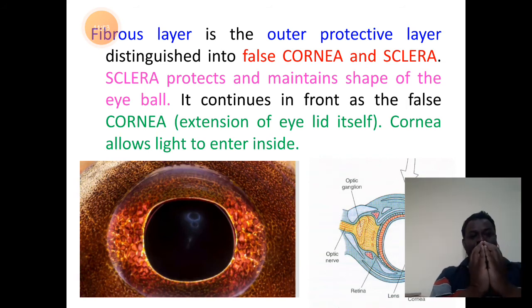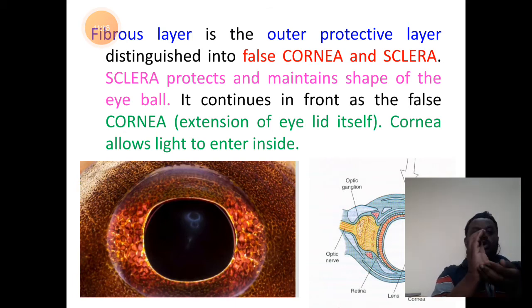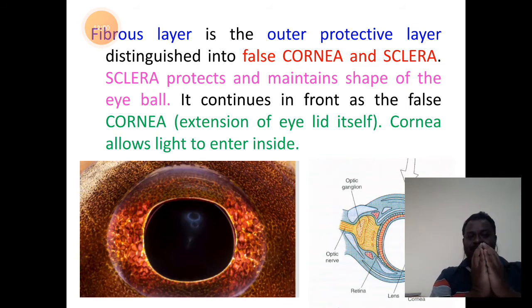The shape of the eye is globular or round — you have an outer coat like an orange peel.